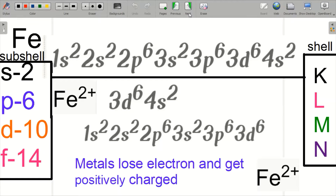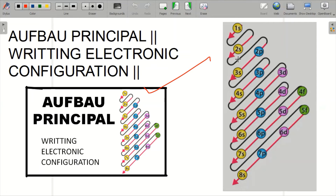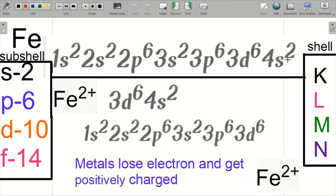Let me explain why iron gets its valency of 2+. First, talking about the electronic configuration — it is based on the Aufbau principle. If you know this principle, you can write: 1s1, 2s2, 2p6, and so on. Only then will you be able to write the full electronic configuration and understand the removal of electrons. The normal electronic configuration of iron is: 1s2 ... 3d6 and 4s2.